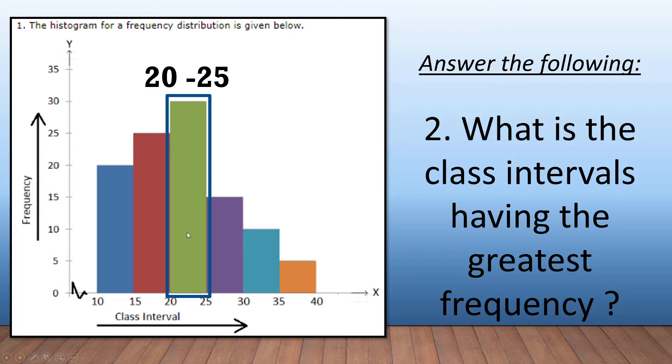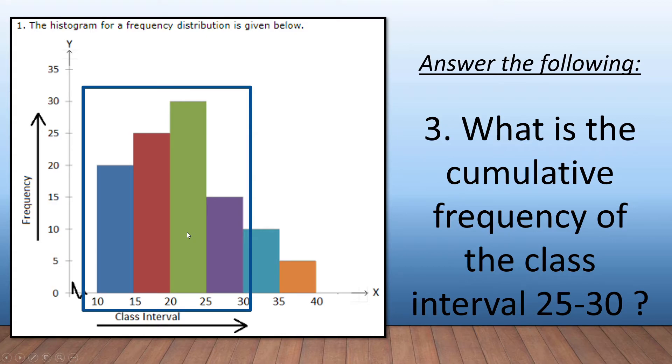And then the last one here we see: what is the cumulative frequency of the class interval 25 to 30? That means because we're dealing with continuous data, we'll have to take all of these into account up to and including the 25 to 30.